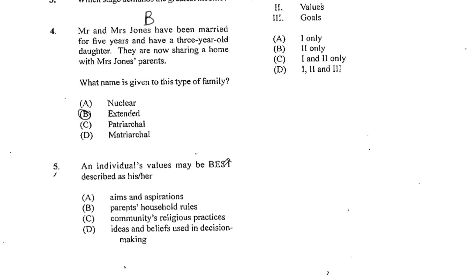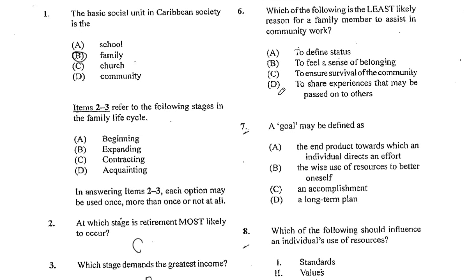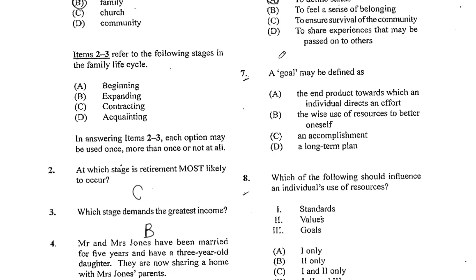Number 5. An individual's values may be best described as his or her ideas and beliefs used in decision-making. So that would be D. Number 6. Which of the following is the least likely reason for a family member to assist in community work? That would be A, to define status. You would want to assist in community work to feel a sense of belonging, to ensure survival of the community, to share experiences — but not necessarily to define status.